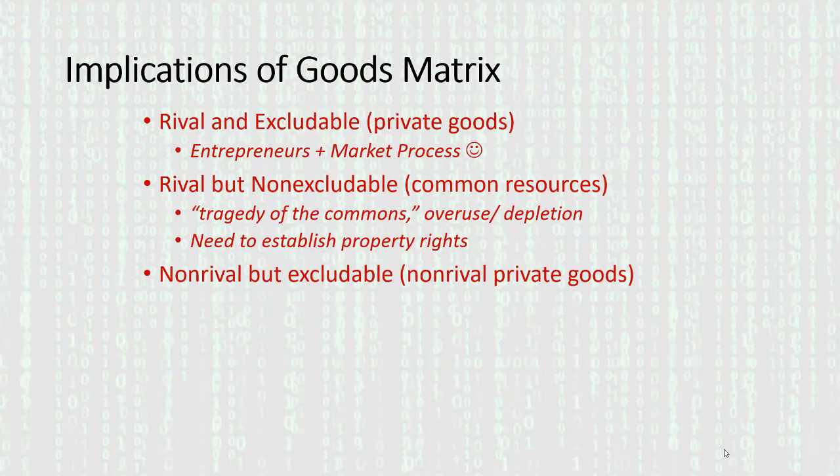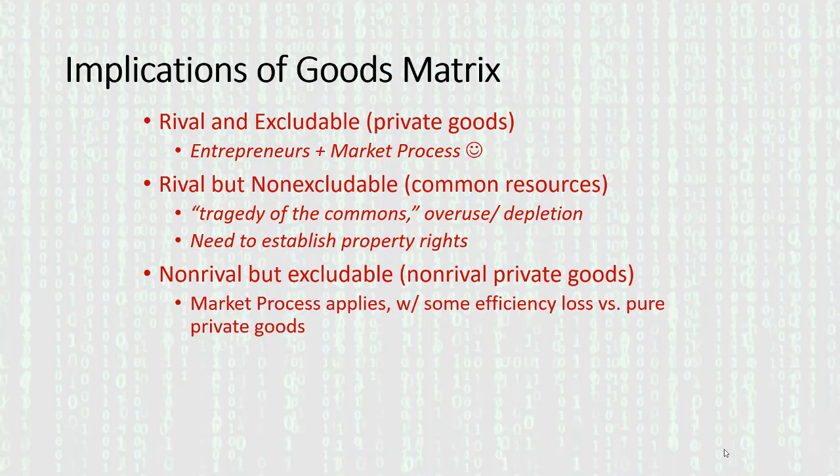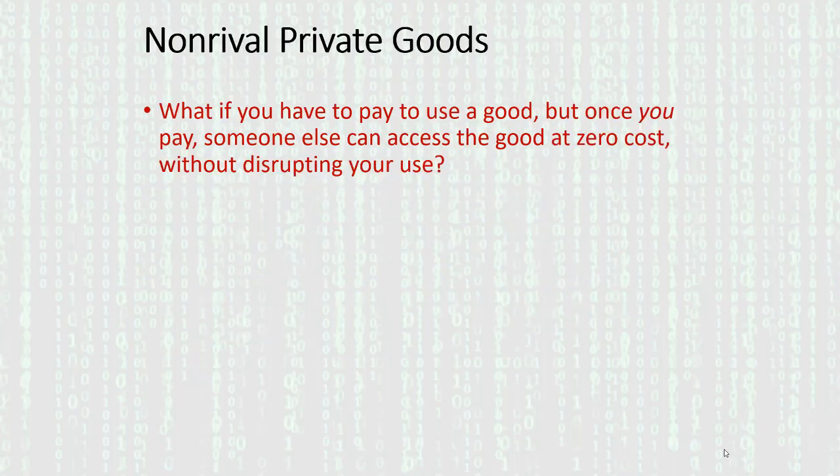Let's move on now to goods that are non-rival but excludable — we call these non-rival private goods. The market process applies here like it does to private goods, but there are going to be some efficiency losses compared with pure private goods. Here's how to think about non-rival private goods: what if you have to pay to use a good, but once you pay, someone else can sneak in behind you and access the good at zero cost — and that doesn't disrupt your use, because these goods are non-rival?